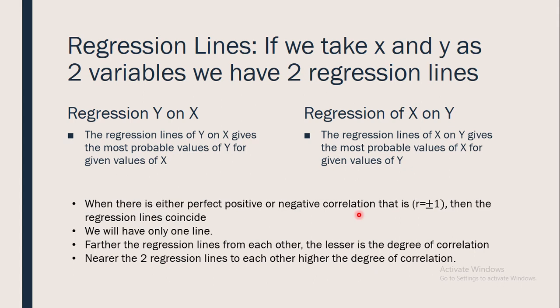If the regression lines coincide we have only one line, indicating perfect correlation. The farther the regression lines are from each other, the lesser the degree of correlation. If the two lines are nearer to each other, there exists a higher degree of correlation between the two random variables x and y. In any case, the line obtained will be a straight line.